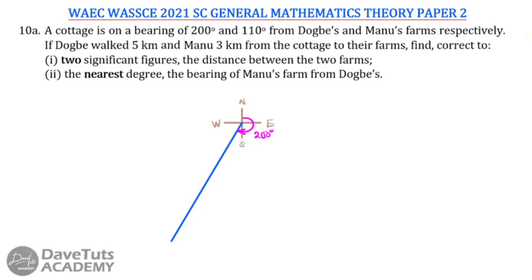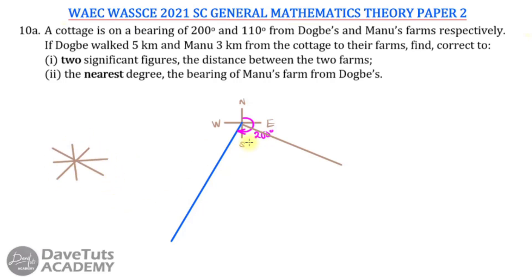From Manu's farm, the bearing is 110°. Since north to east is 90°, 110° is just 20° more than 90°, placing it in the second quadrant. We are not taking this from Dubois farm — we take it from Manu's farm, so Manu's farm should be located so that the 110° bearing line from it meets the 200° bearing line from Dubois at the cottage.